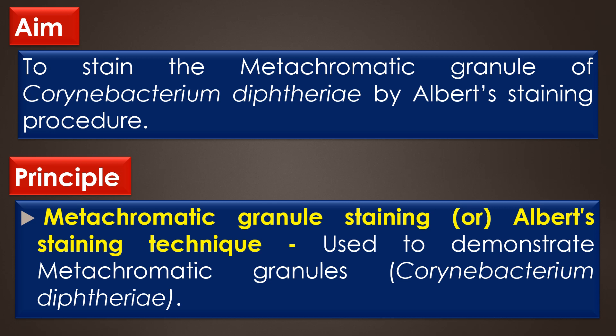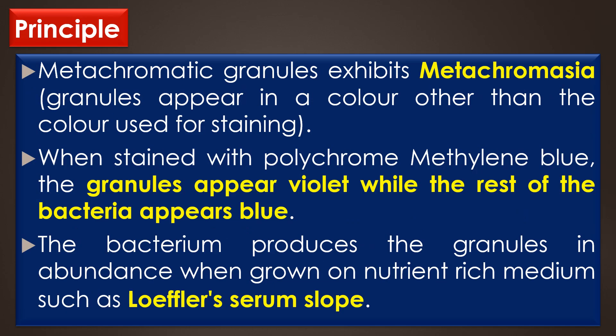The metachromatic granules are made up of poly-metaphosphates and are also known by various other names such as volutin bodies, Babes-Ernst granules, or polar bodies. The storage granules in the bacteria are called metachromatic granules because they exhibit the property of metachromasia, wherein the granules appear in a colour other than the colour used for staining.